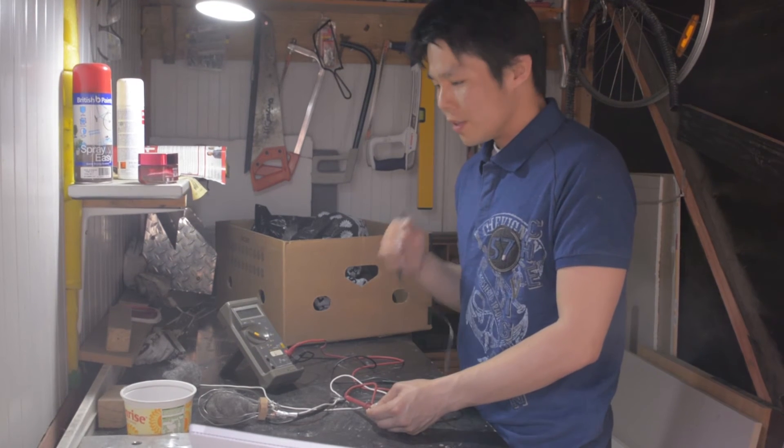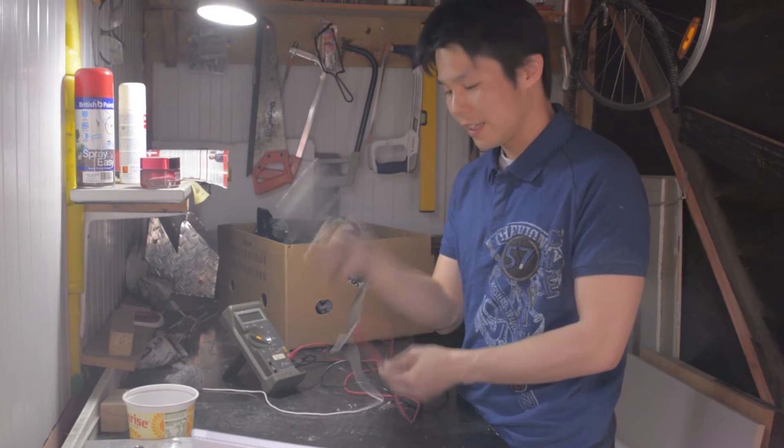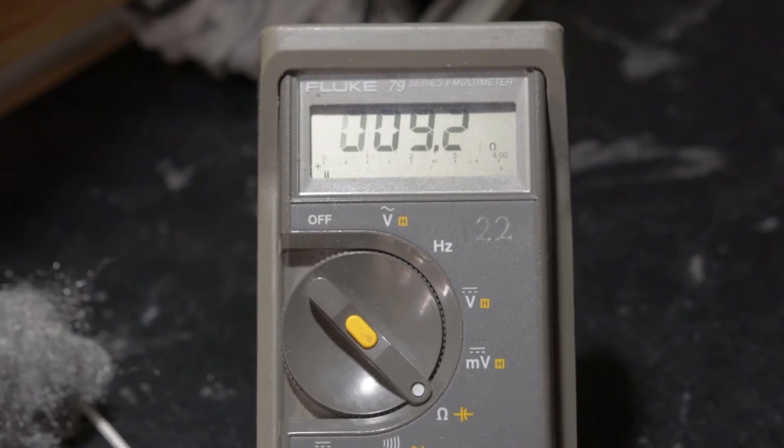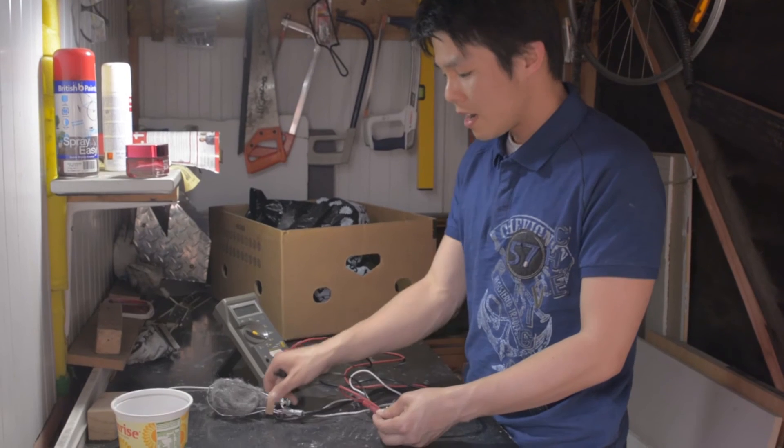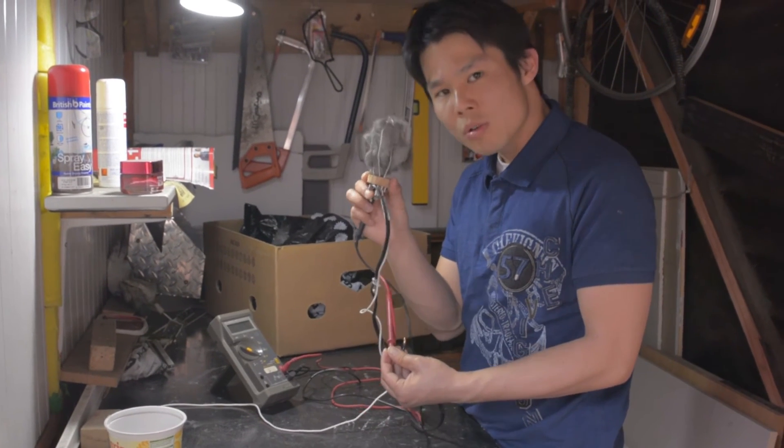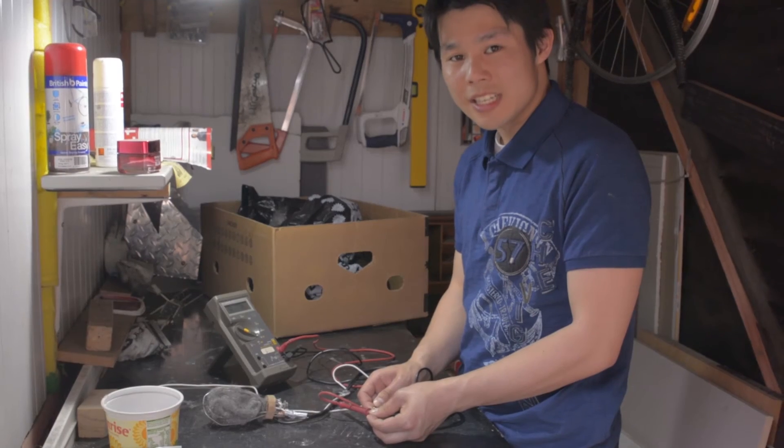The problem is, the resistance of a blob of steel wool can vary wildly depending on how you load it. For example, when it's loaded in like this, the resistance is almost 10 ohms, which is kind of the range in which I want it to be. Right now I've got a very large blob all compacted, and the resistance is 0.8, practically a dead short.